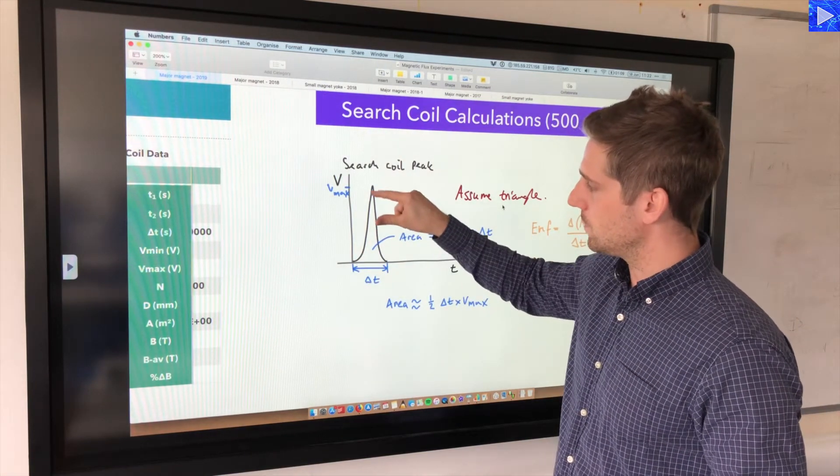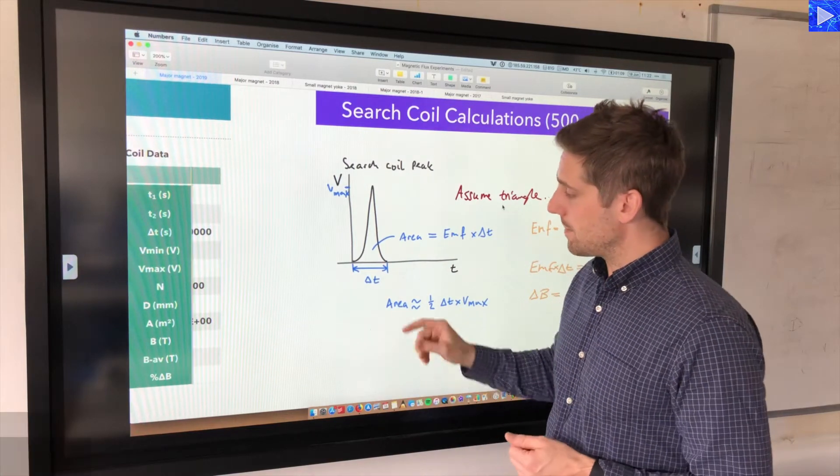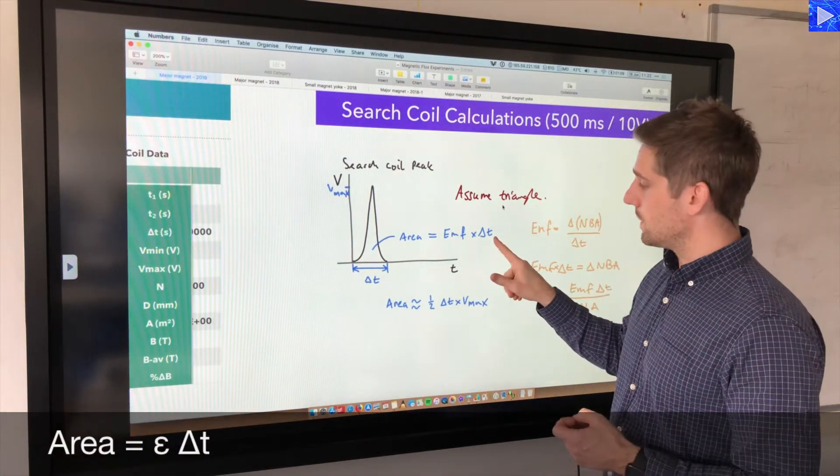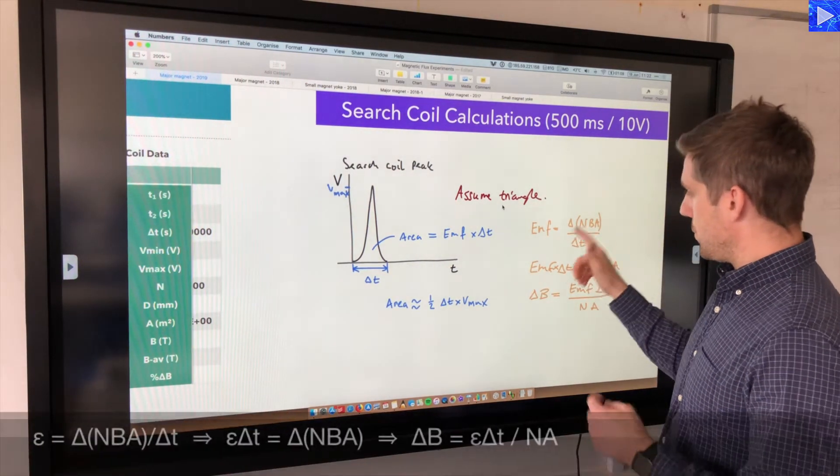So that it can be estimated as a triangle. Obviously there is some curvature here, you see a bit of curvature at the top. We're going to assume it's a triangle and work on that basis. The area under gives me EMF times delta T.